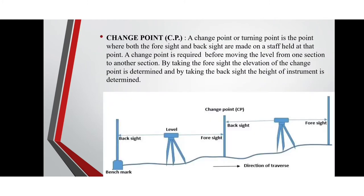Change point: a change point or turning point is the point where both the foresight and back sight are made on a staff held at that point. A change point is required before moving the level from one section to another. By taking the foresight, the elevation of the change point is determined, and by taking the back sight, the height of instrument is determined. Here's a picture showing the foresight, back sight, change point, benchmark, and the height of instrument.